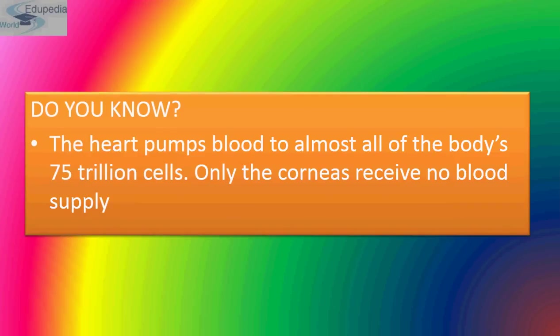The heart pumps blood to almost all of the body's cells — there are around 75 trillion cells in an average normal adult. The only exception is the cornea, which doesn't receive any blood supply from the heart.